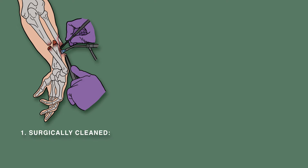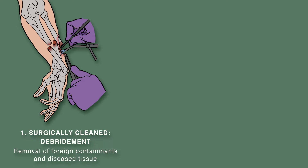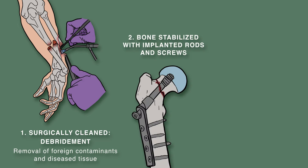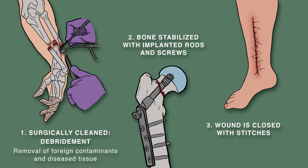The wound needs to be surgically cleaned by a medical professional, which involves debridement — the removal of all foreign contaminants and diseased tissue. Then, the bone is stabilized using implanted rods and screws, and the wound is closed with stitches.